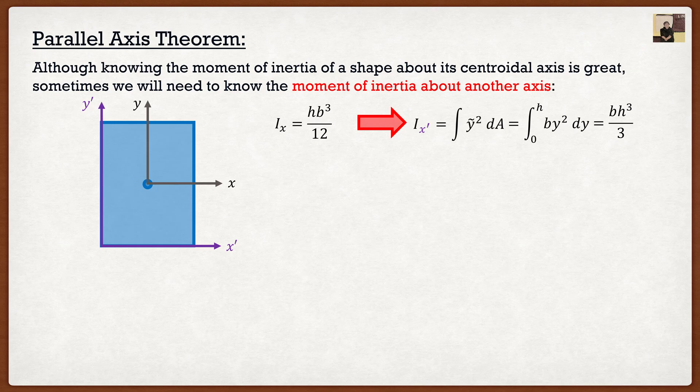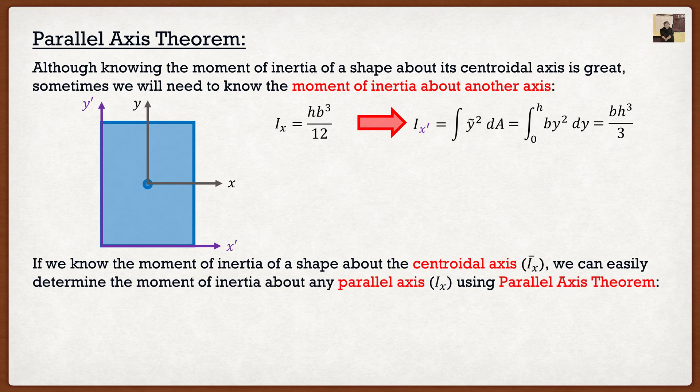But this is the trick — this is the goal of parallel axis theorem. Parallel axis theorem says that if we know the moment of inertia about the centroidal axis, which we do — base times height cubed divided by 12 — then we can easily determine the moment of inertia about any parallel axis. The formula is: the moment of inertia about any parallel axis equals the moment of inertia about the centroidal axis plus A times d squared.